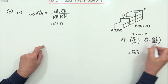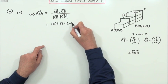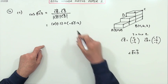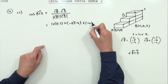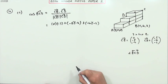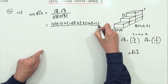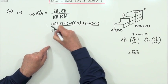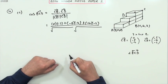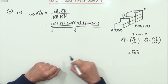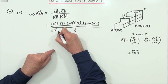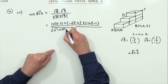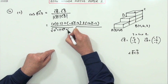So CB dot CD, the scalar product: that will be the 0 times the -3 multiplying the x components, plus -8 times -4 multiplying the y components, plus -4 times -2 multiplying the z components. I can sit and wait whilst I put this down. Now the length, the length of CB will be the square root of the squares of those: 0 squared, -8 squared, and -4 squared.